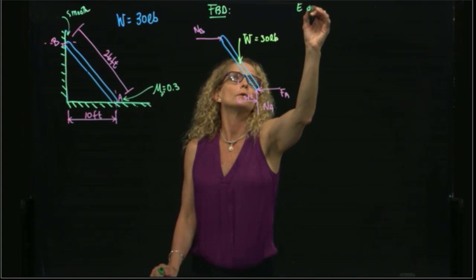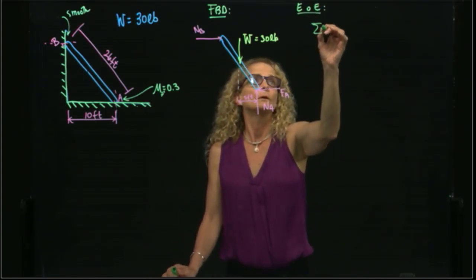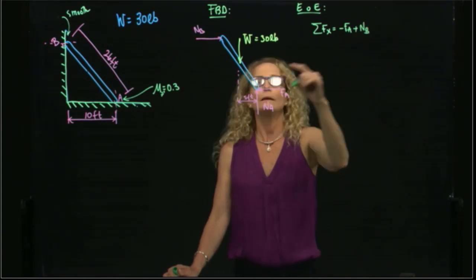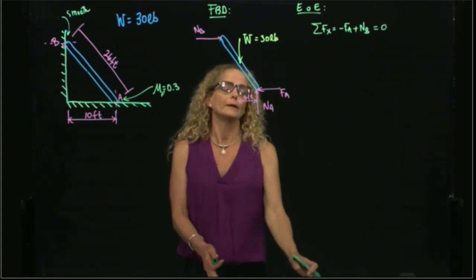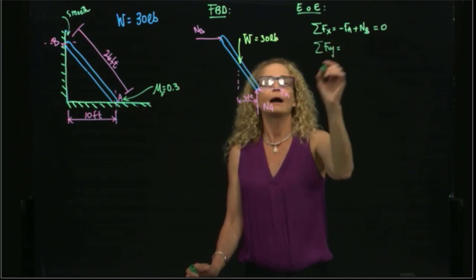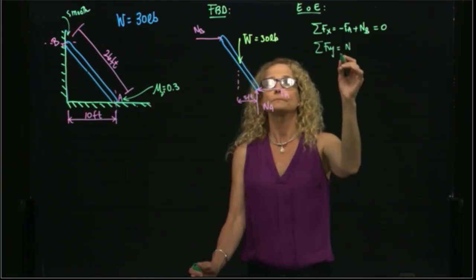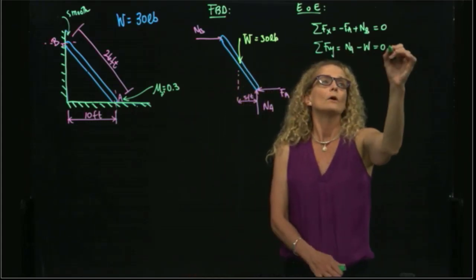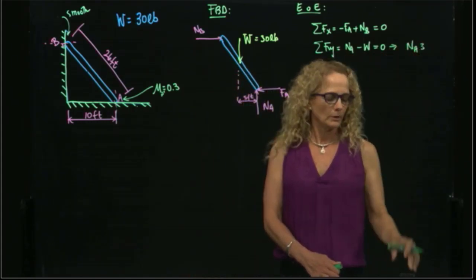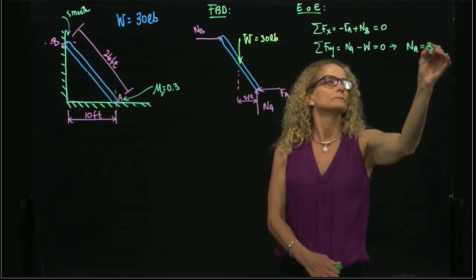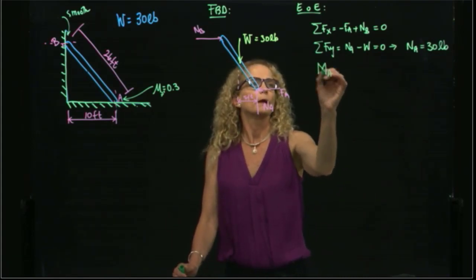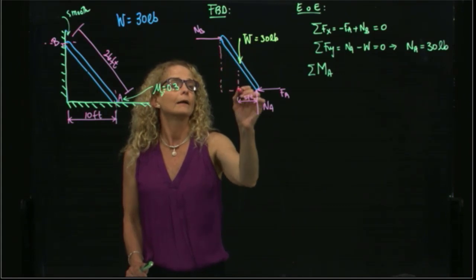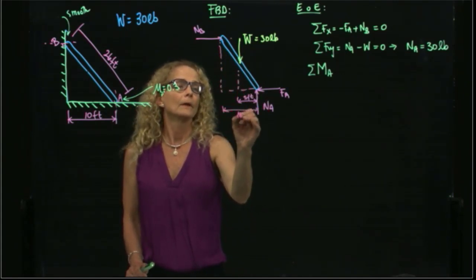Now that we have our free body diagram, we can apply our equations of equilibrium. Adding forces in X: negative FA plus NB equals 0. Those two are unknown, so I need more equations. Adding forces in Y: NA minus weight equals 0. The weight is known, it's 30, so NA equals 30 pounds. We take moments with respect to one of the points — A or B — and I have to find this height. Since this is 10 and this is 26, I can find the height.